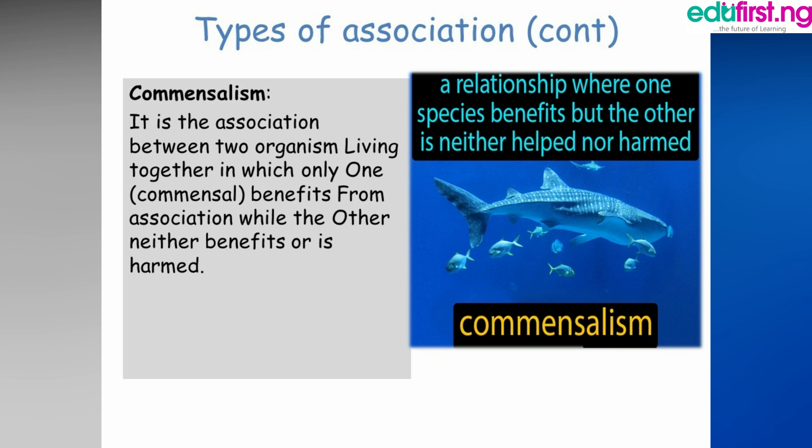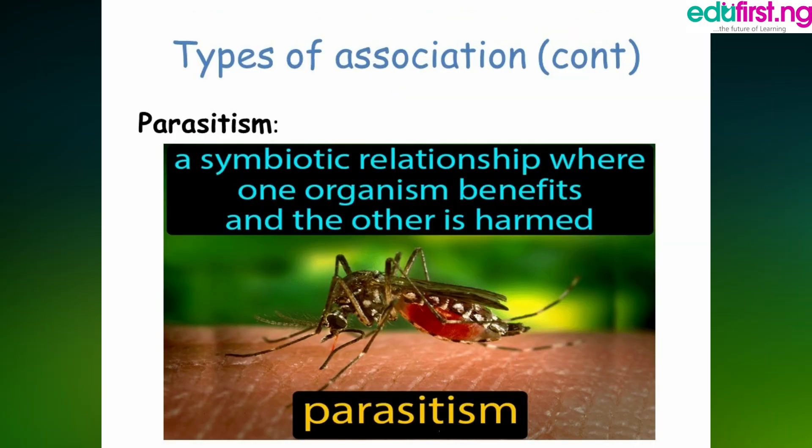We have parasitism. A parasite — team A is like a parasite on team B — which shows a symbiotic relationship where one organism benefits and the other is harmed. In layman's terms, the other one is being cheated. That kind of relationship is called parasitism.